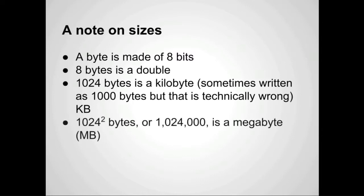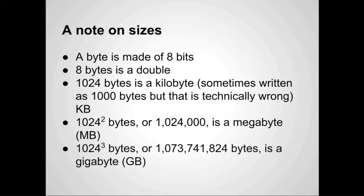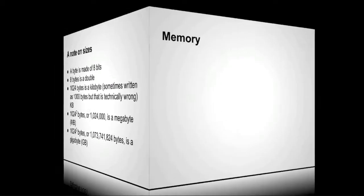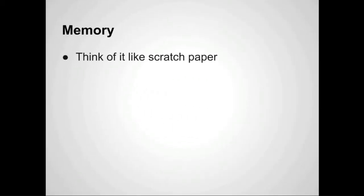1,024 squared bytes — or 1,048,576 bytes — is a megabyte, abbreviated capital MB. 1,024 cubed, or 1,073,741,824 bytes, is a gigabyte, abbreviated capital GB. So back to memory: think of it like scratch paper. It's what your computer uses when it's working through problems as it's processing information.